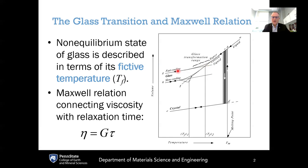One interesting thing about the glassy state is that because it is out of equilibrium, the properties of the glass depend not just on the chemistry, temperature, and pressure, but also on the entire thermal history. A fast-cooled glass has usually a higher molar volume compared to a more slowly cooled glass. To account for this thermal history dependence, we define a property called the fictive temperature — obtained by drawing a tangent line to a glass line and seeing where it intersects the supercooled liquid line. That intersection temperature is called the fictive temperature.